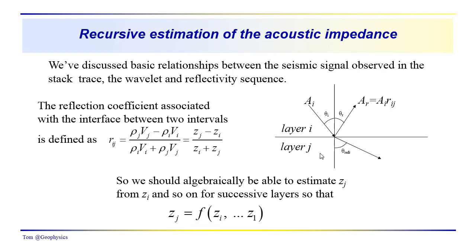Rho j and v j would be the density and interval velocity in layer j. Rho sub i and v sub i would be the density and interval velocity in layer i. The product rho sub j times v sub j is the acoustic impedance in layer j, which we represent by z sub j. And z sub i is the acoustic impedance in the overlying layer. The reflection coefficient is the difference z sub j minus z sub i over z sub i plus z sub j, which is the sum of the two impedances — twice the average, as we discussed previously.